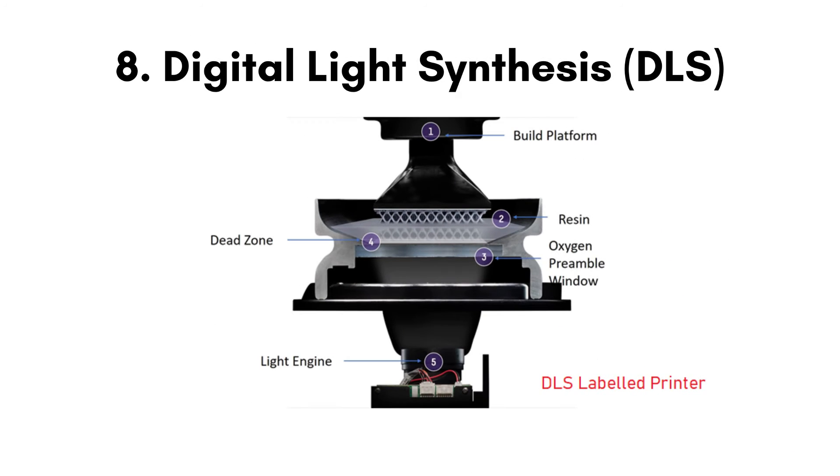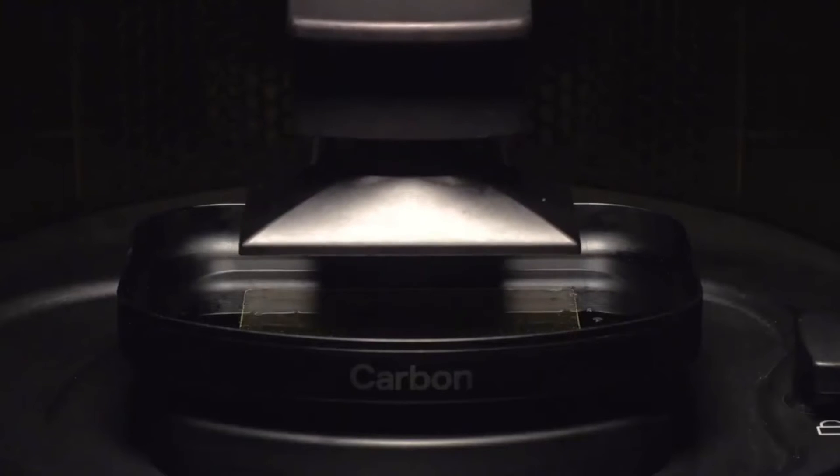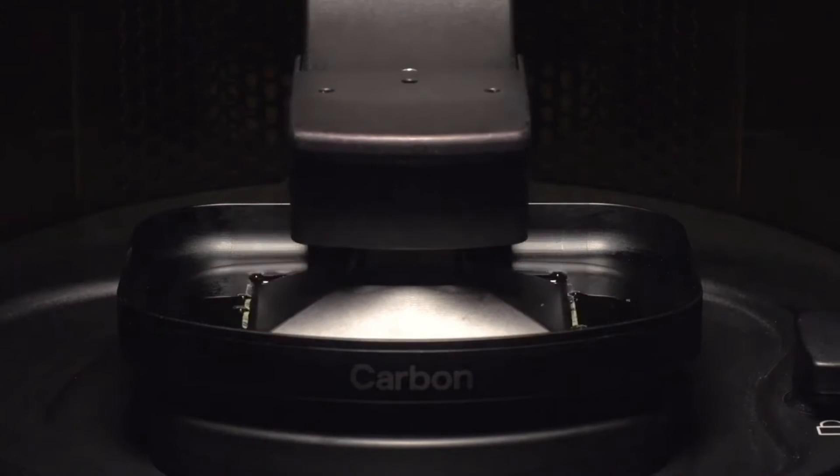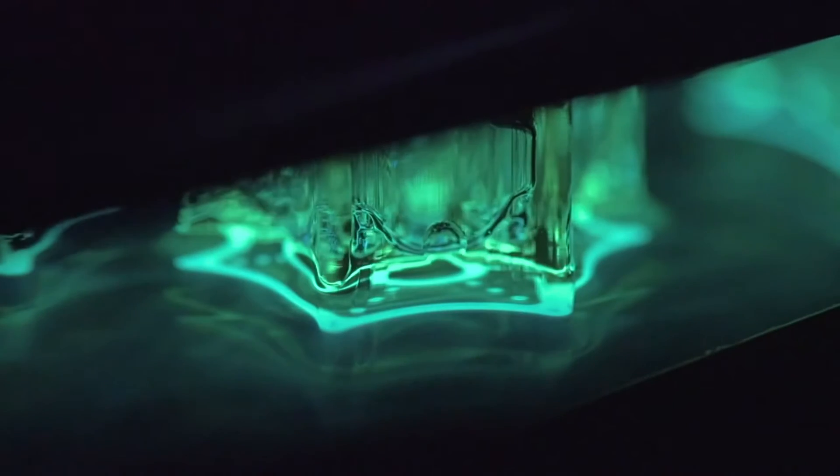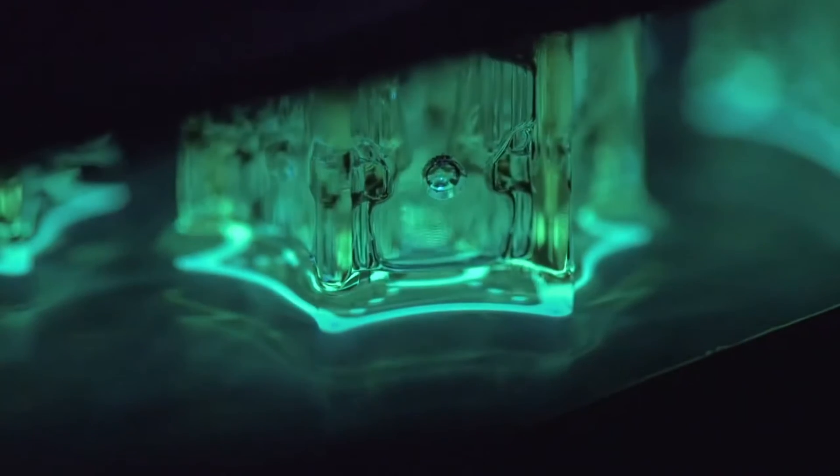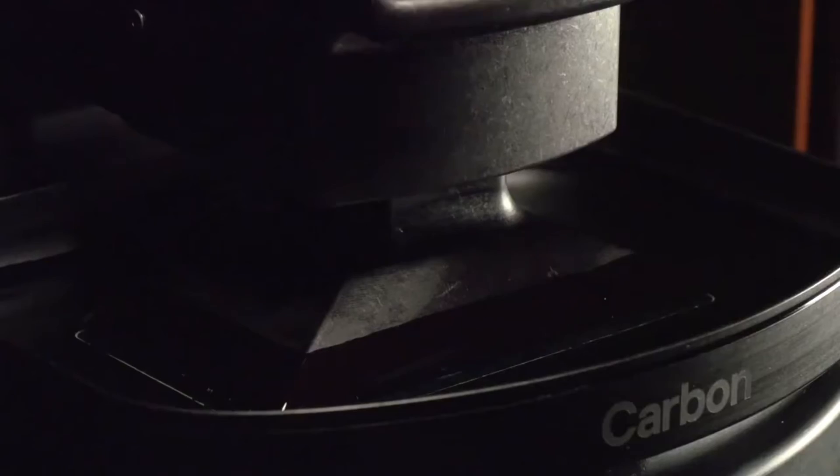Number 8. Digital Light Synthesis DLS. DLS combines digital light projection, oxygen permeable optics, and programmable liquid resins to produce parts. A digital light projector is used to project an image of each layer onto a pool of liquid photopolymer resin. The resin solidifies when exposed to light, forming the desired shape.